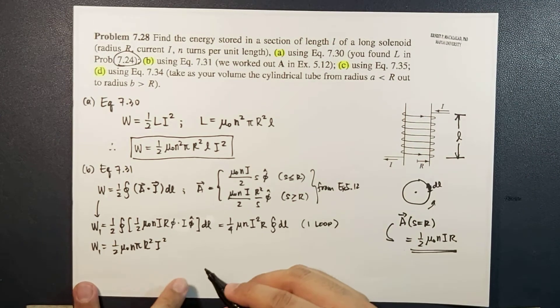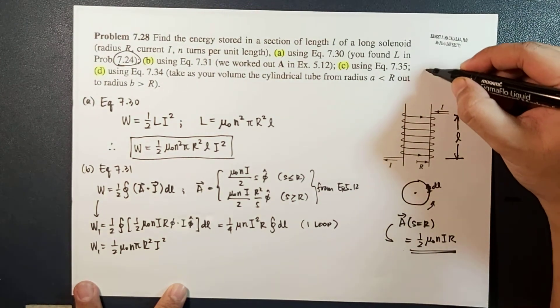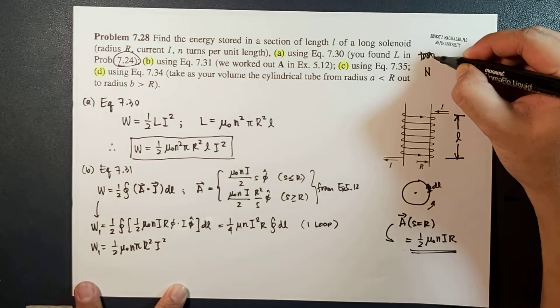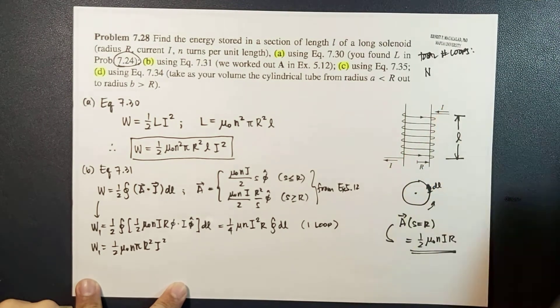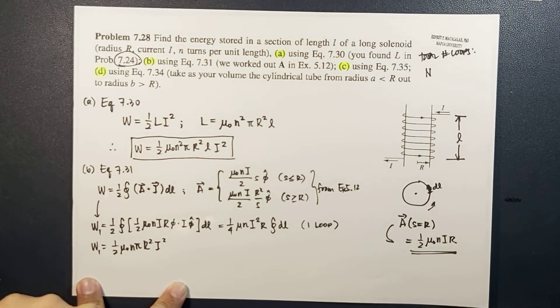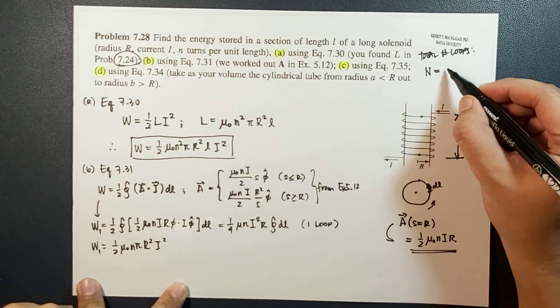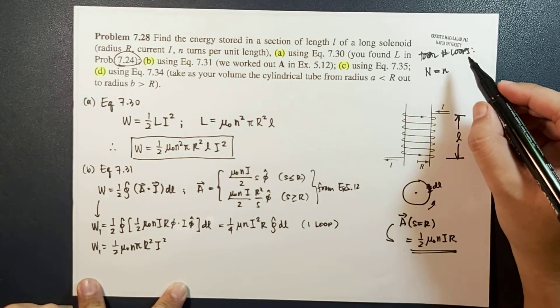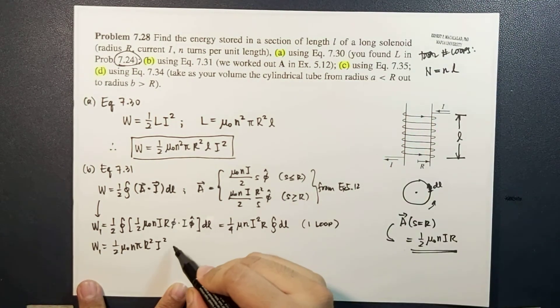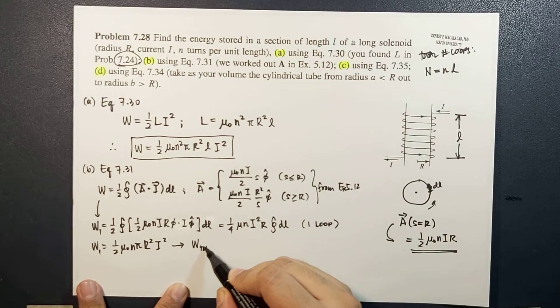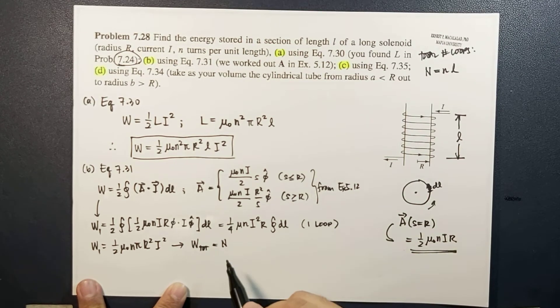Now since we have total n number of loops, remember that the total number of loops capital N is equal to n turns per unit length times the total l. This means that the total work done or total stored energy will just be the stored energy for each loop times N total.